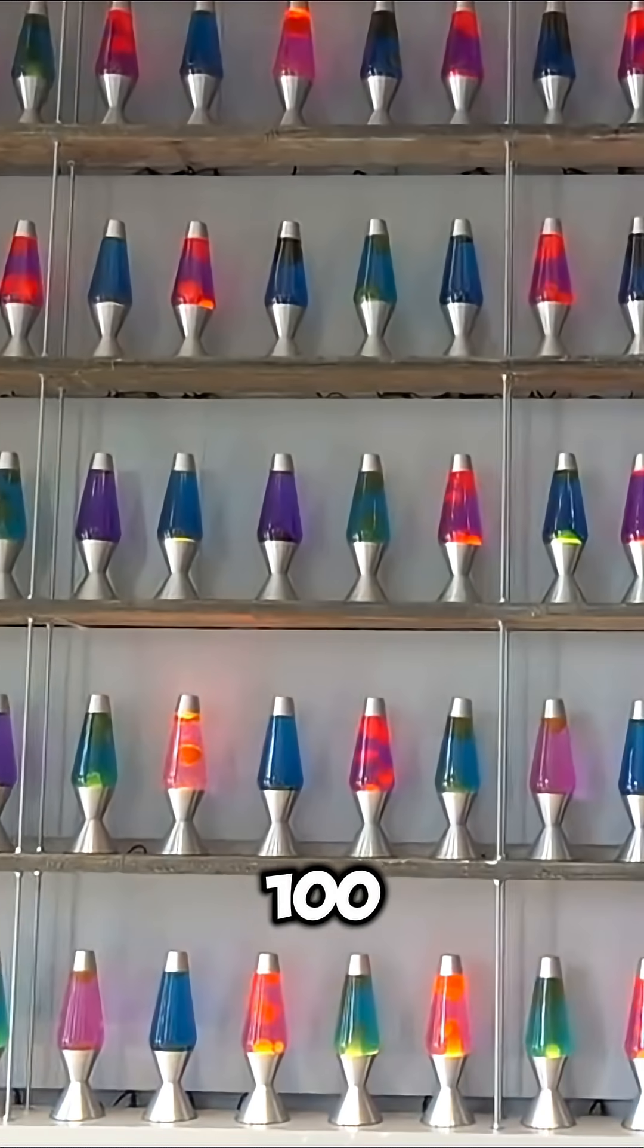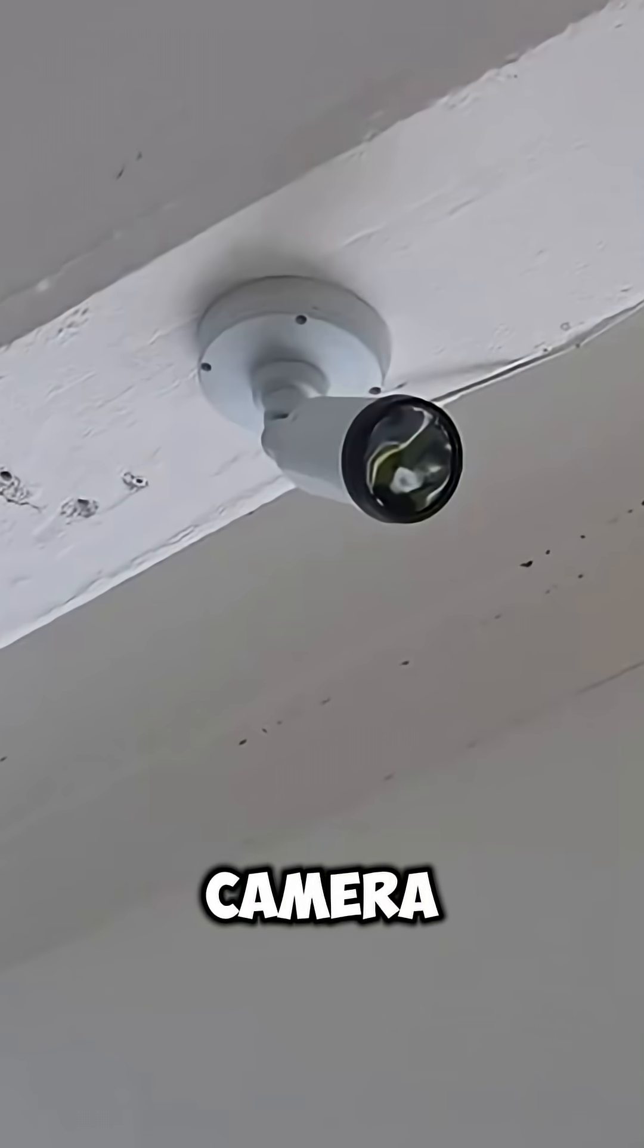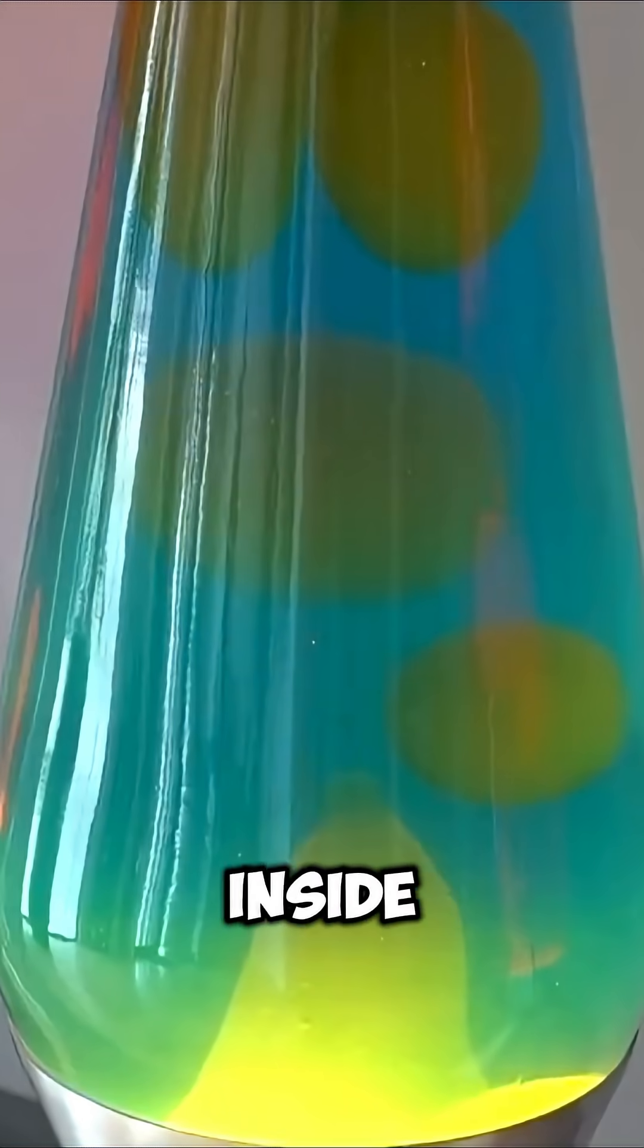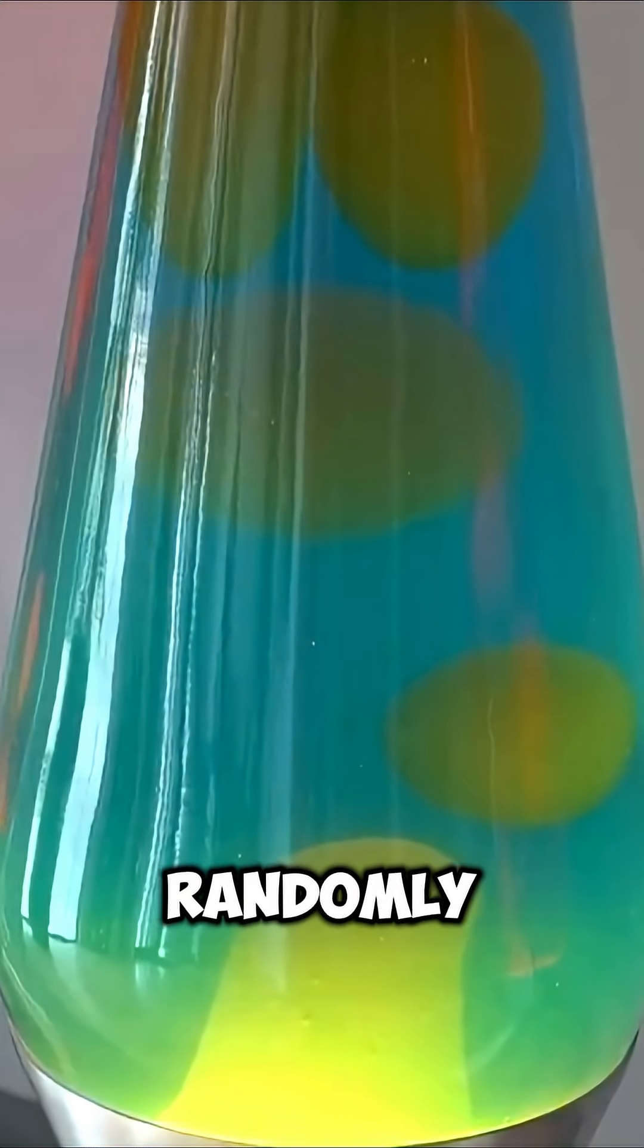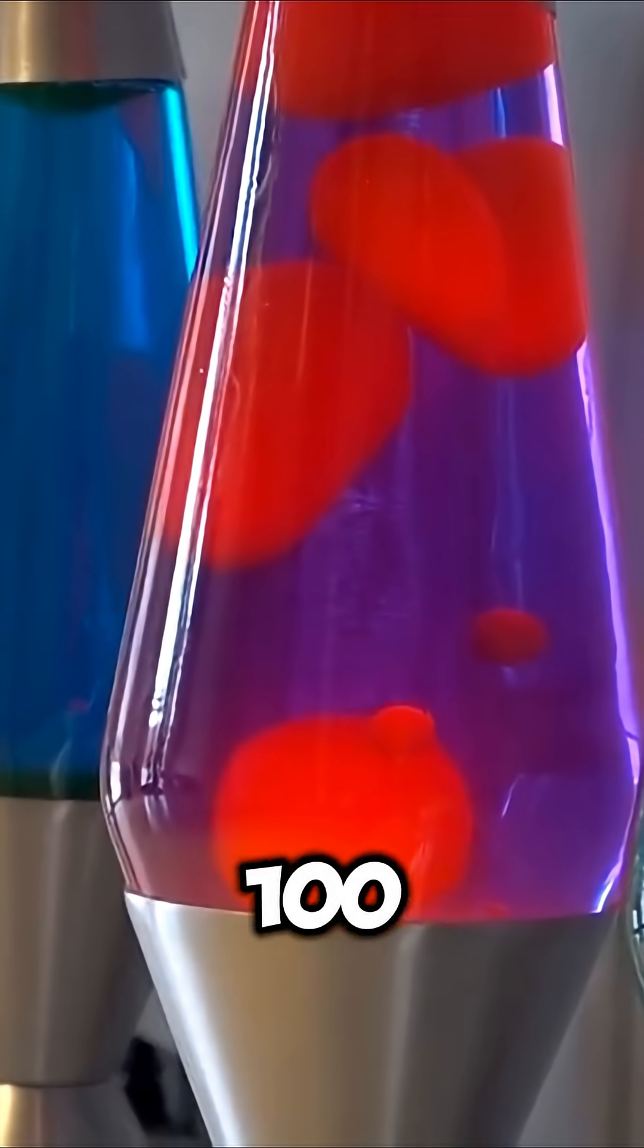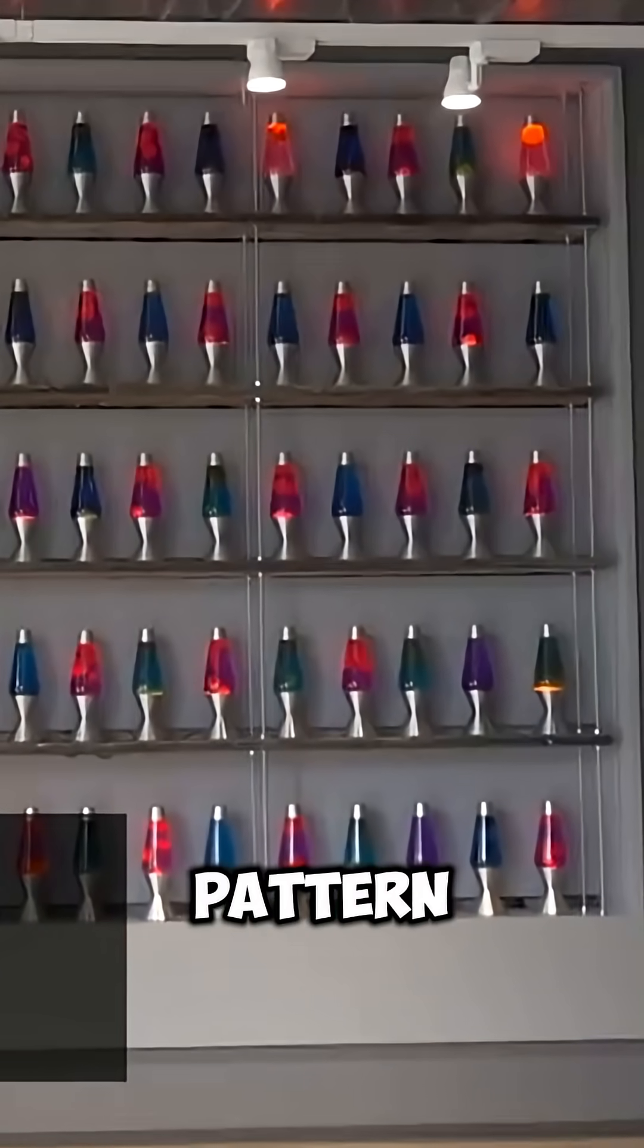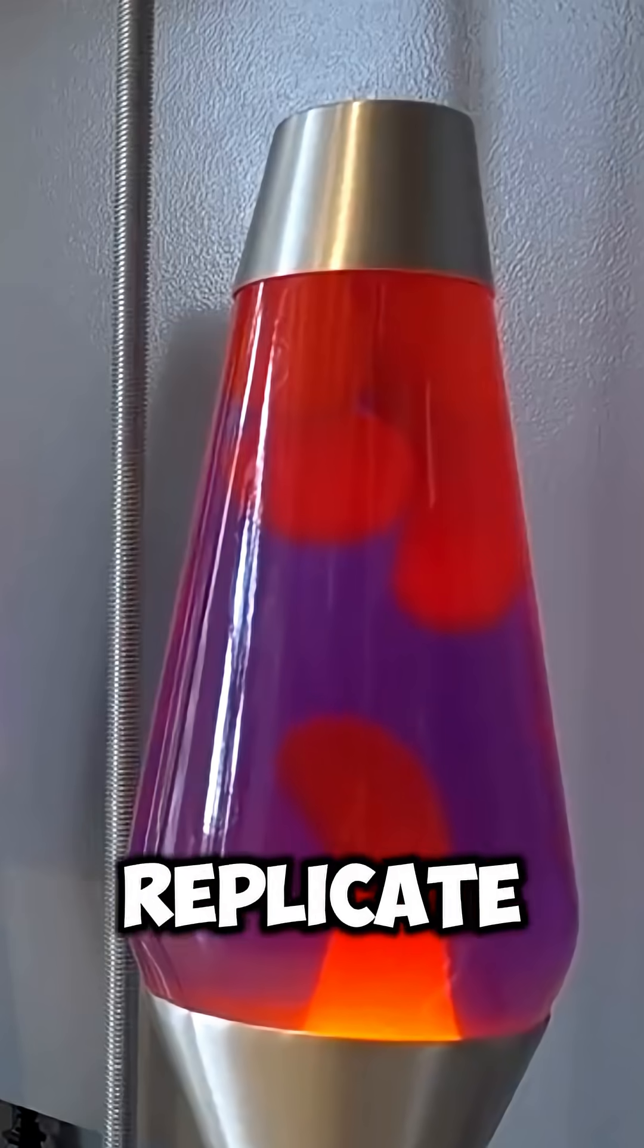There are 100 such lamps at Cloudflare's headquarters, and a camera constantly monitors them 24-7. The substance inside a lava lamp moves randomly. Because of this, when 100 lava lamps are moving randomly, the pattern they create is almost impossible to replicate.